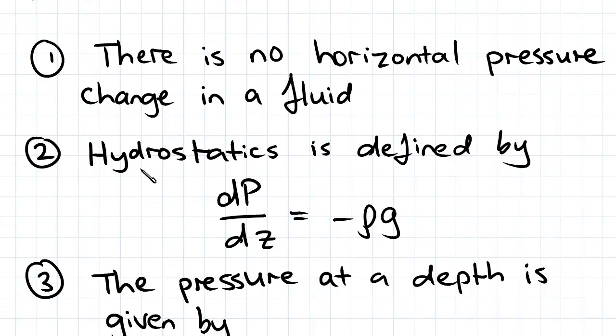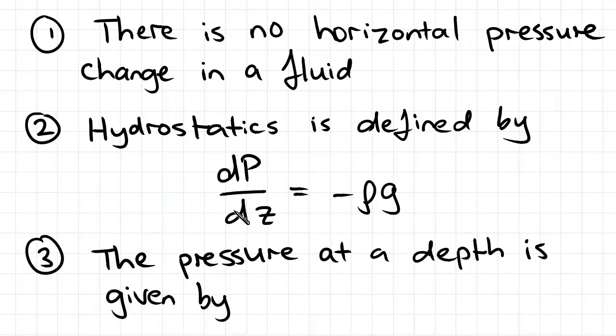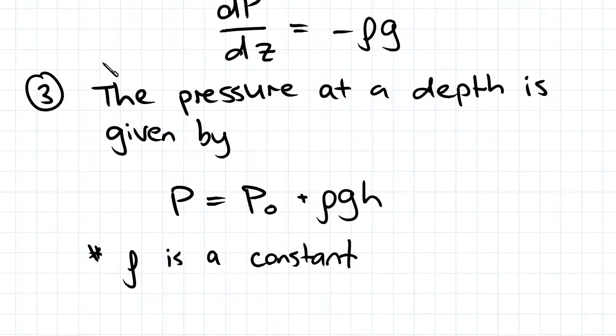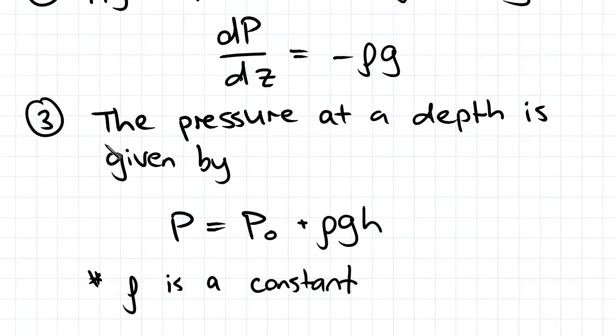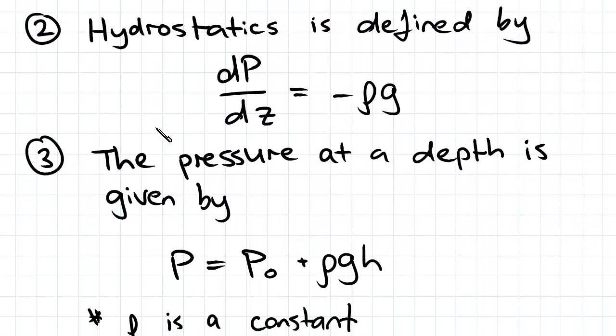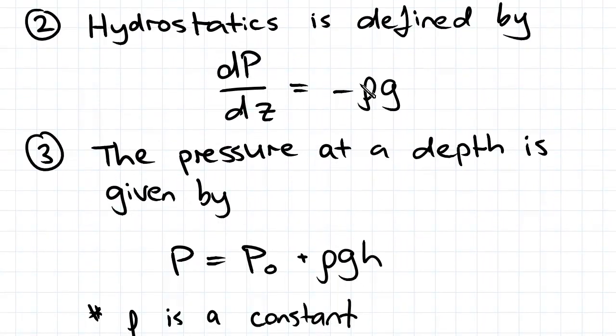Hydrostatics depends on three things. There is no horizontal pressure change in a fluid. Hydrostatics is defined by the change in pressure with z equaling negative rho g. And the pressure at depth is given by P equal to P0 plus rho g h. So just remember that there is no horizontal pressure, and these are the two equations that you really need to know.